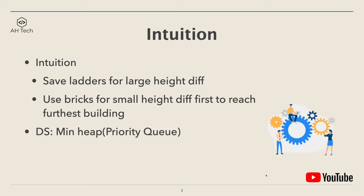The key intuition to solve this question is that the ladder is more valuable than bricks, because with a ladder we can jump any amount of height difference. So we want to save ladders for large height differences and use bricks for small height differences first, in order to reach the furthest building. The best data structure to keep track of the smallest height difference we have so far is a minimum heap, also called a priority queue.